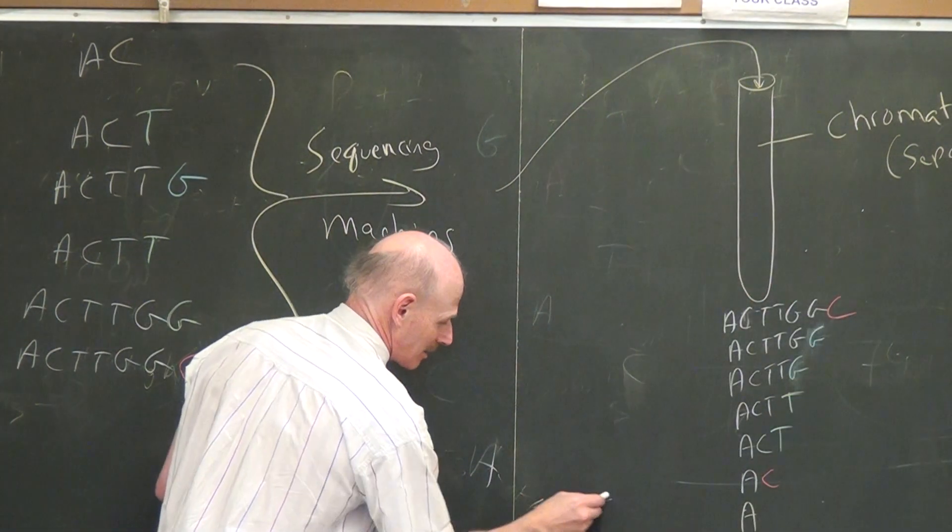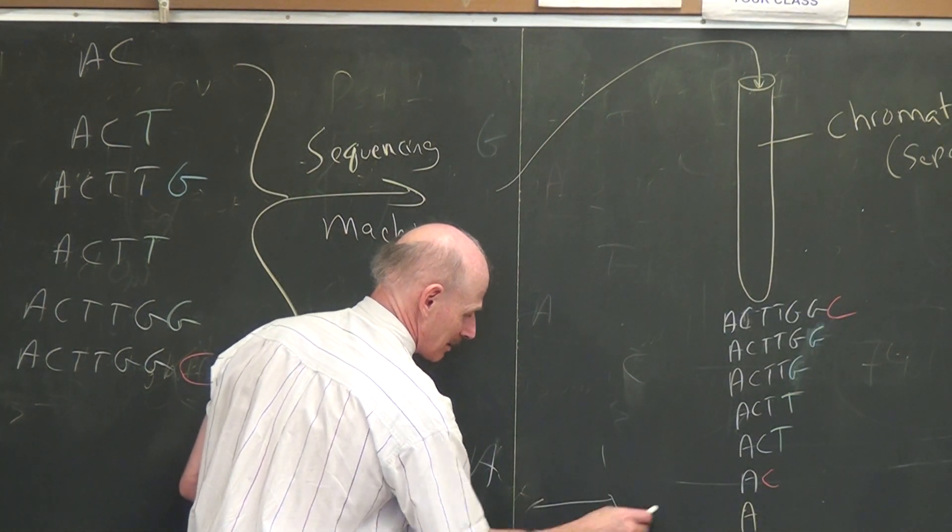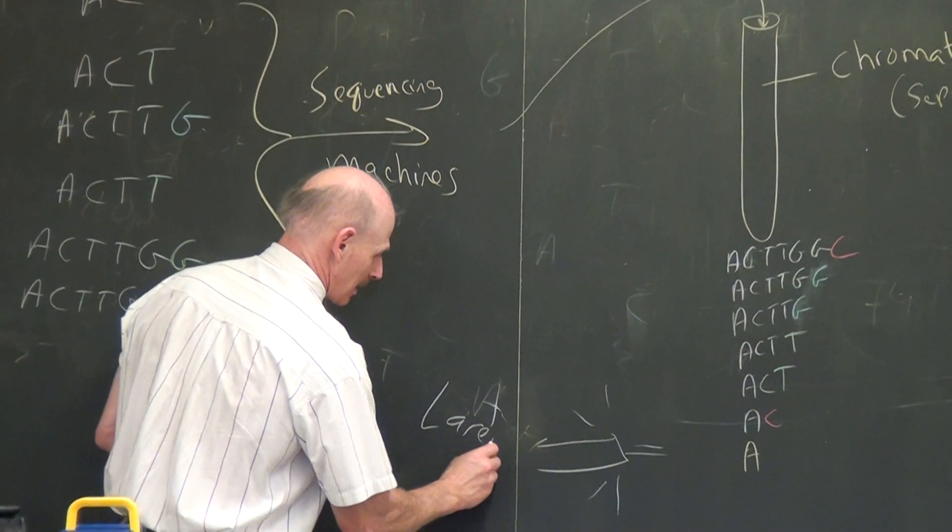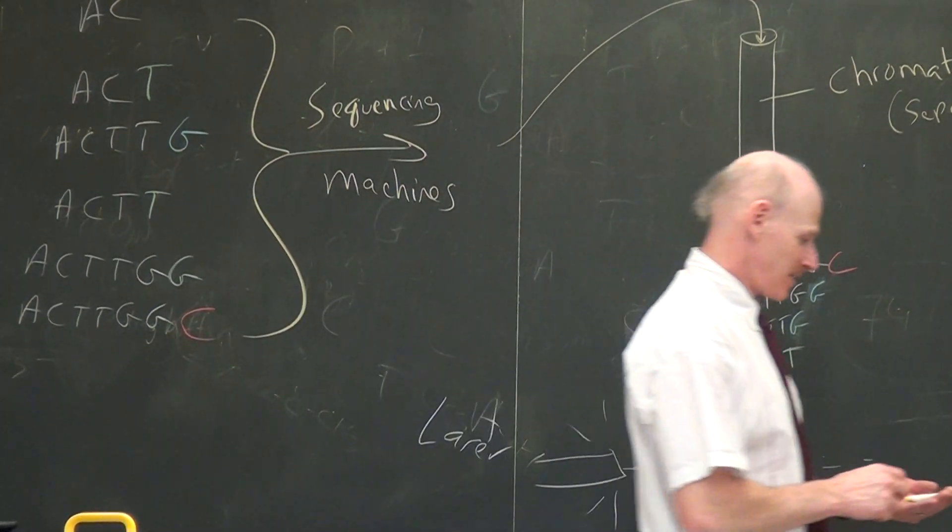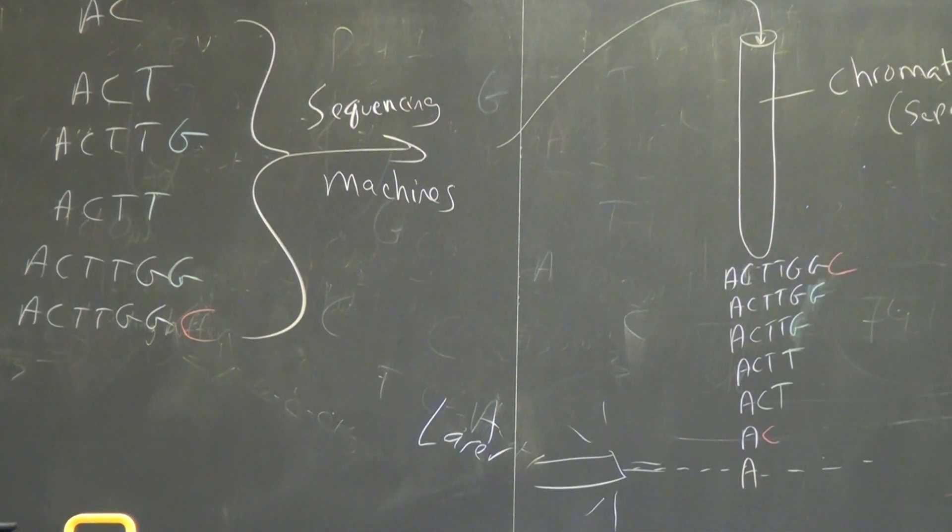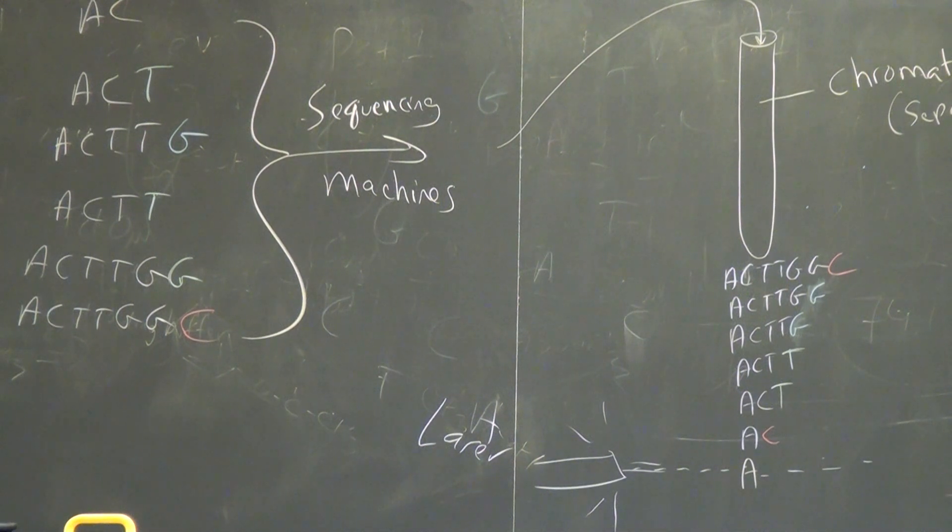And what you do is you have a laser shining here that's capable of detecting the colors. So this laser sees a yellow thing go through first, like that. And the computer says, oh, okay, if I saw a yellow there, that must be an A. And then the next thing that comes through there is red. And the laser sees that and says, aha, that's got to be C because I know C's are red. And so it essentially, by reading the colors coming through, it's able to reconstruct the sequence of your original gene, or at least the complement to that gene.